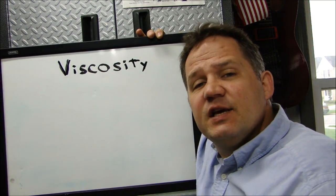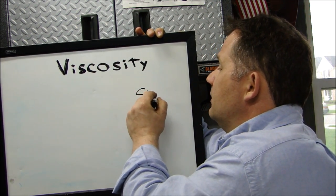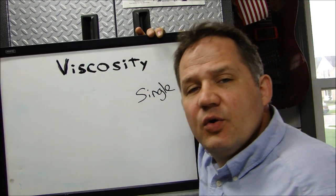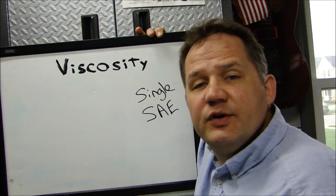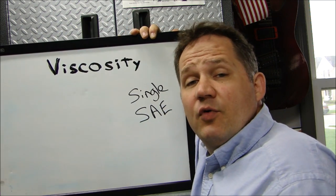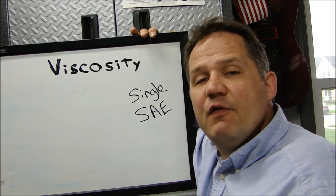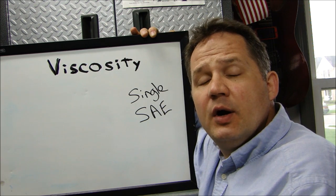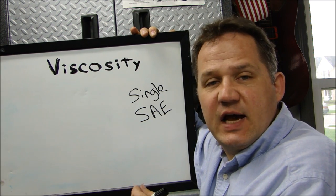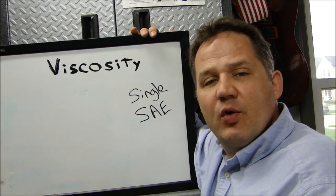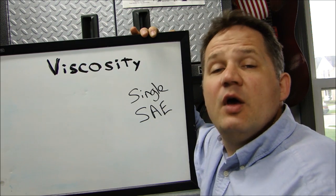We'll talk about the viscosity of motor oil. The first thing we're going to talk about are single viscosity oils, also known as SAE oils. SAE stands for the Society of Automotive Engineers — it's a standard developed for measuring oil viscosities. The flow rate is measured by how fast oil flows through a calculated orifice size. It's usually measured in centipoise or centistokes — centipoise is a standard measurement of flow for viscosity.